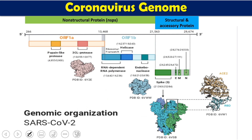For all these proteins, the coronavirus has corresponding genes. The genome is roughly 30 kb in total. The maximum portion — roughly more than 21 kb — gives the non-structural proteins, which are different types of enzymes: papain-like protease, other proteases, RNA-dependent RNA polymerase, endonuclease, and helicase. Only about 8 to 9 kb of genes are responsible for structural proteins such as S, E, M, and N.